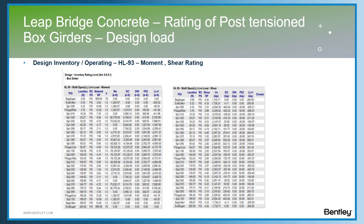The first report is for the design inventory and operating moment and shear rating report. It's quite extensive and a little bit difficult to view. It shows the POI, the locations, the type of structure — whether it's a reinforced concrete or pre-stress structure — the rating factor values, the K value, the moment capacity, the DC moment (dead load moment), the pre-stress, and the live load moment. The second report is for the shear rating factor, providing the same information for shear, dead load and live load, and the rating factor is calculated.